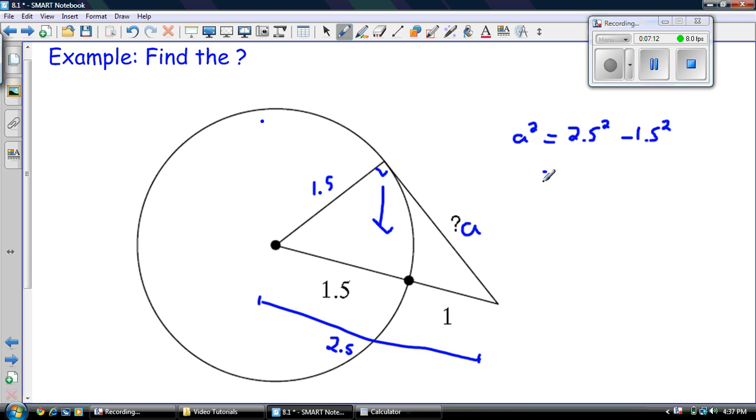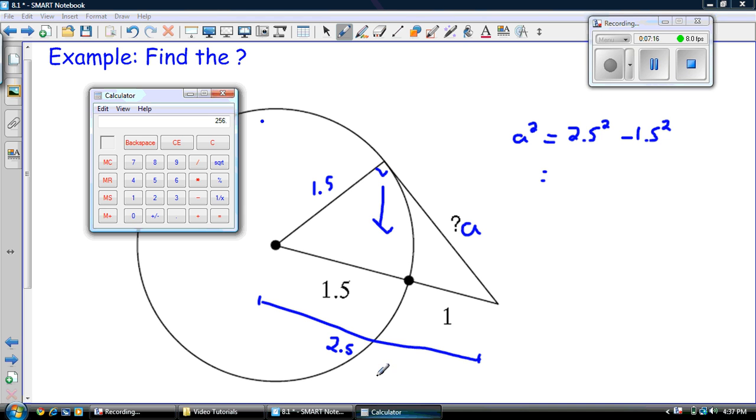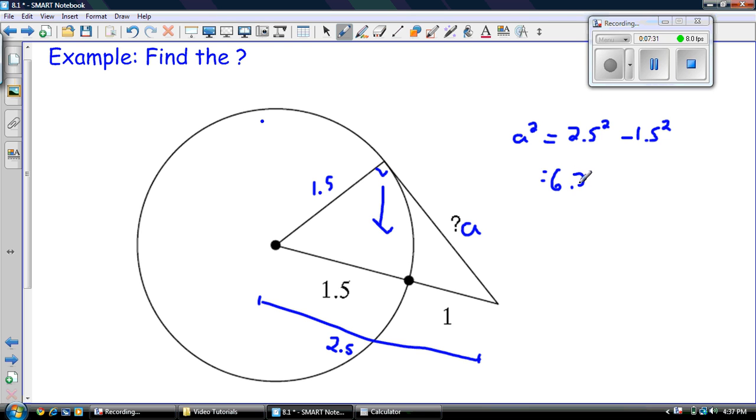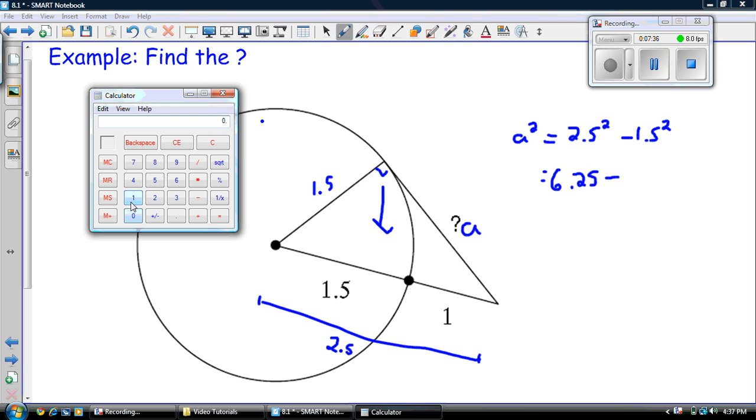So I'm not going to use much mental math on this. I'm just going to use my calculator. 2.5 times 2.5, and that's equal to 6.25. I want to be sure I'm on a test. I'm not going to allow myself to make a mistake that could cost me a couple marks. And then 1.5 times 1.5, 2.25.